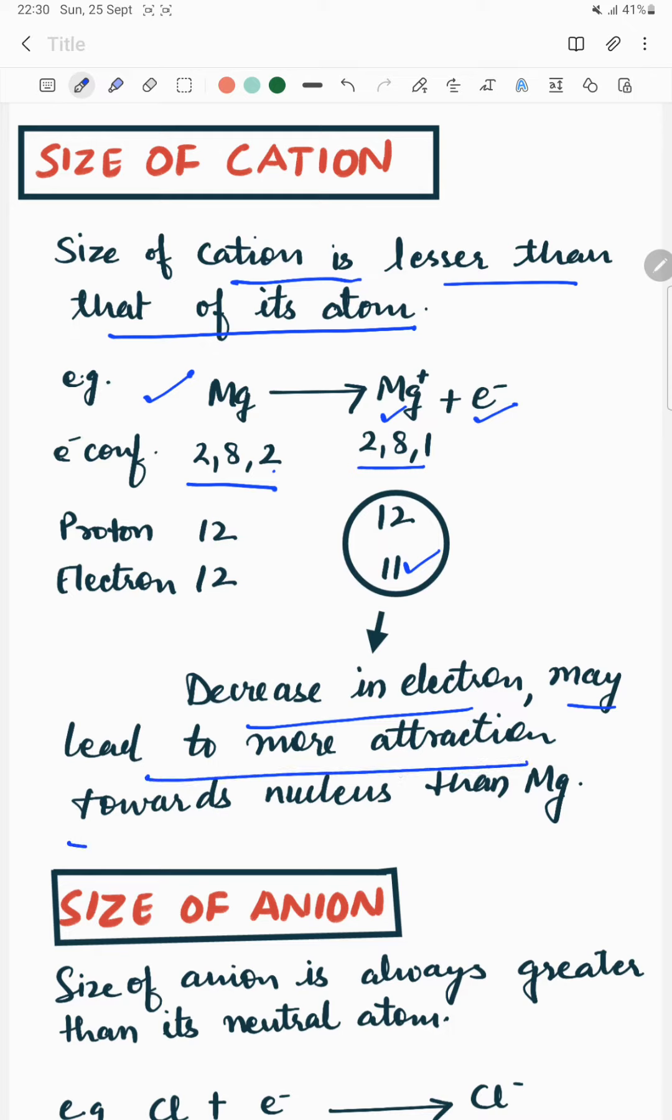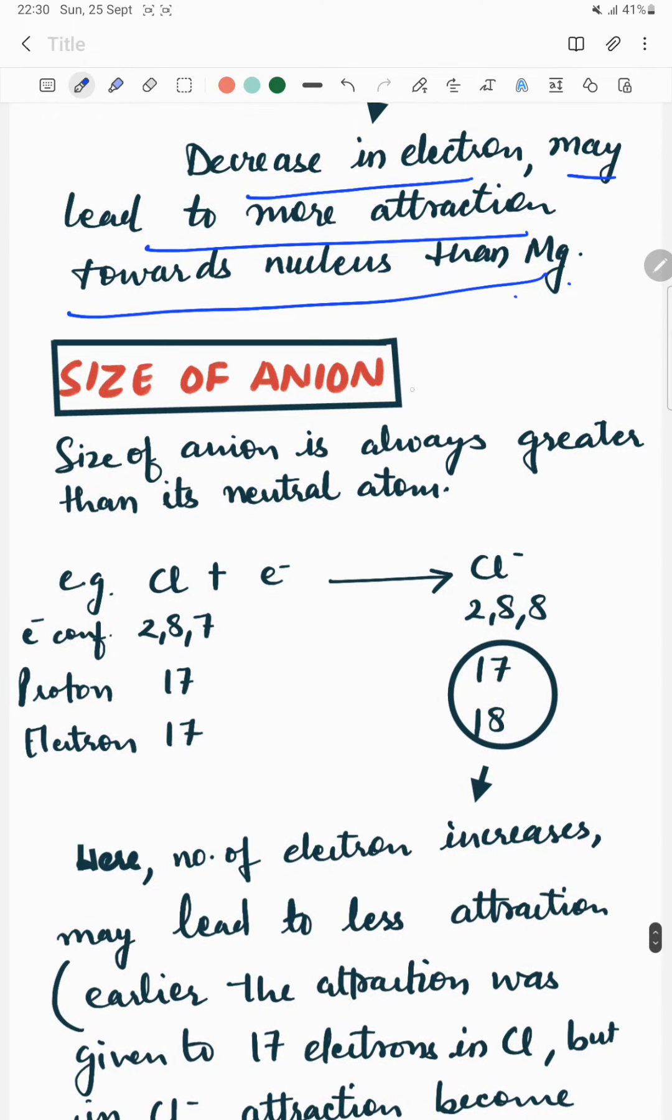Here, 12 protons attract 12 electrons, but in this case Mg plus, the 12 protons attract only 11. So here is more attraction as compared to magnesium. Therefore, size of cation is lesser than its atom.